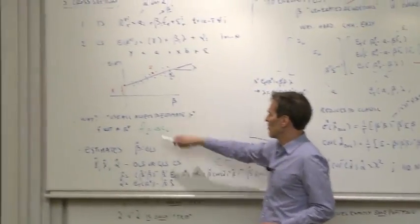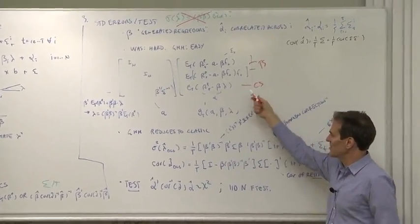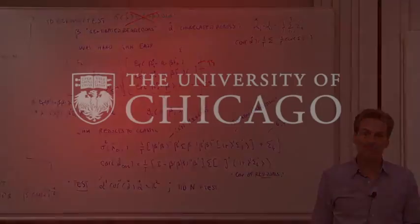So cross-sectional regression: the method, what we're doing, how we got our estimates, and then formulas for standard errors and test statistics that take care of the econometric problems with these regressions.